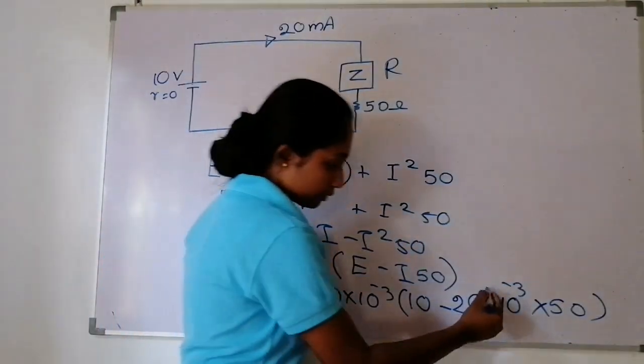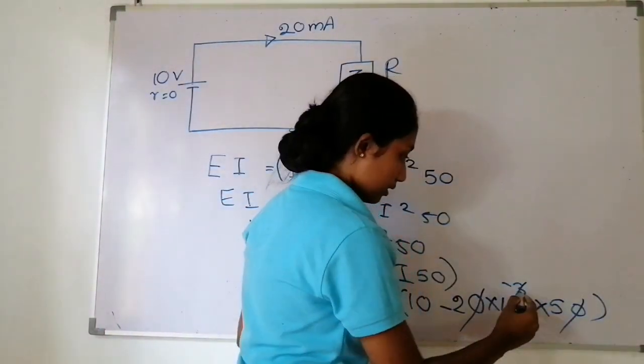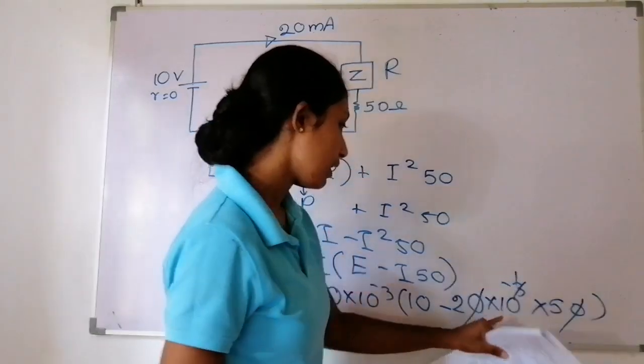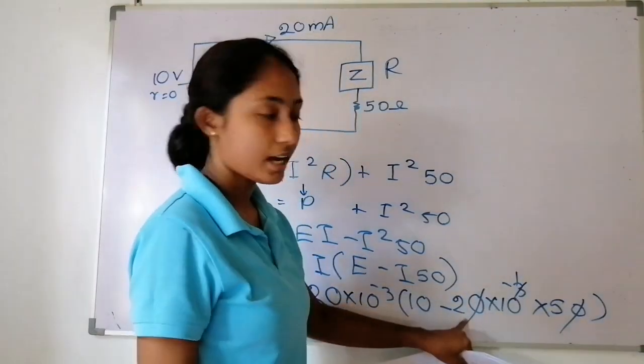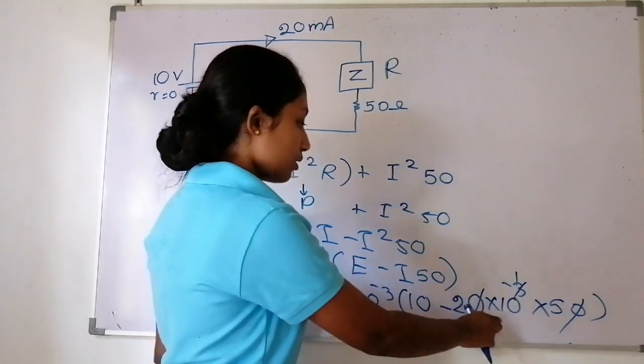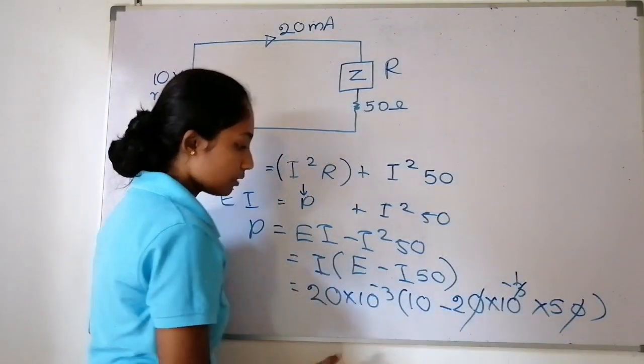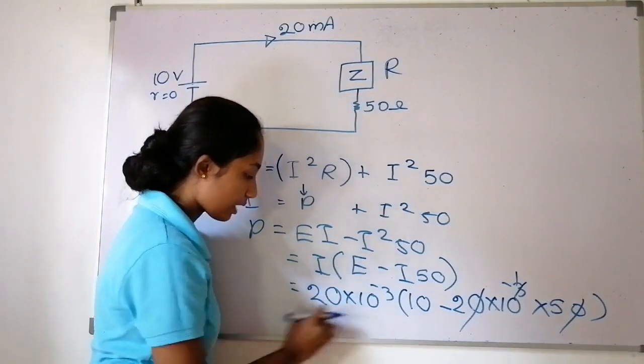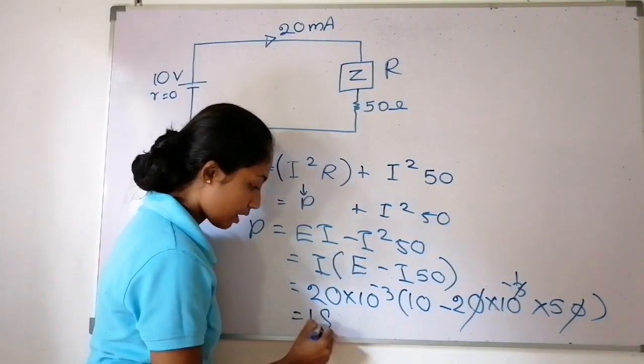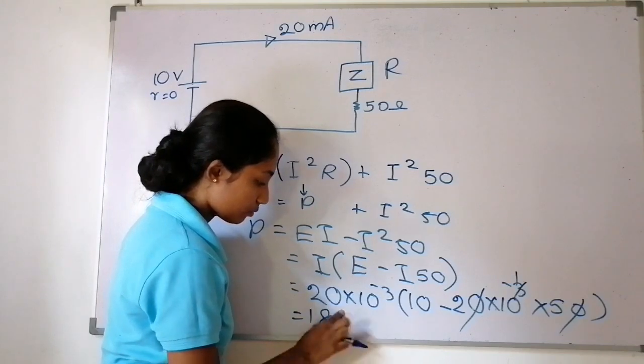Rearranging to solve for R, we multiply both sides by R and divide by the current. R equals 10 divided by 20 times 10 to the minus 3.